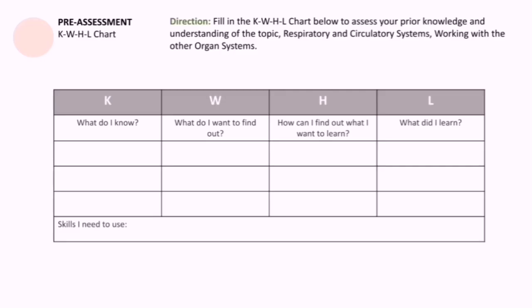For the pre-assessment, you have the following directions. Fill in the KWHL chart below to assess your prior knowledge and understanding of the topic — respiratory and circulatory systems working with the other organ systems. For the first column, 'What do I know?' — please put a maximum of three things that you already know. For the W column, 'What do I want to find out?' — what would you like to learn? You may give a maximum of three.